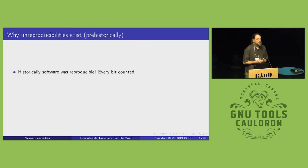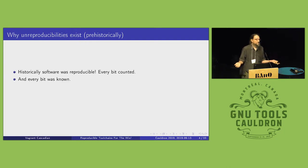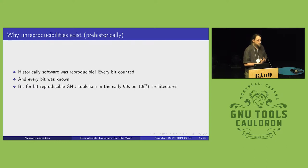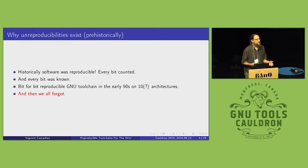Historically, software was reproducible. In the way old days, you knew exactly what every single bit was. Things have gotten more complicated over time and that's no longer the case. I've even heard stories that in the early 80s, a lot of the GNU toolchain had effort to actually make the toolchain itself reproducible and its outputs. But then time passed, weird things happened, and that's not the way it is today. Which is a shame, but we're working on fixing it again.